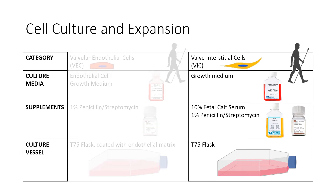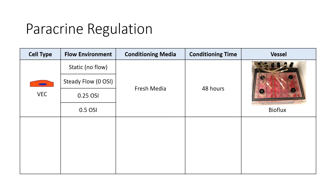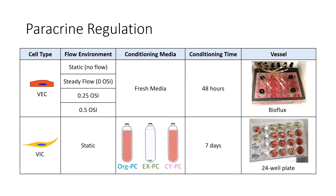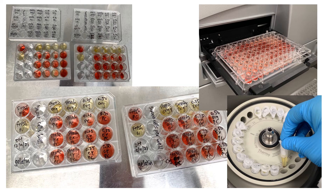Next, we purchased commercially available human VICs and expanded them in flasks. To simulate paracrine signaling, we used the conditioned media from VECs in all flow groups to further culture VICs. The VICs were conditioned in static for seven days in the three groups of procalcific VEC media collected earlier. We then used alizarin red to quantify the level of calcification in each sample, and the samples were normalized through the amount of protein secreted in the individual wells.